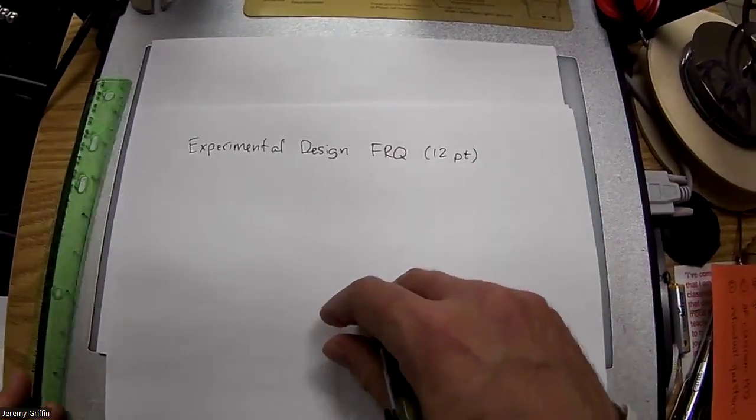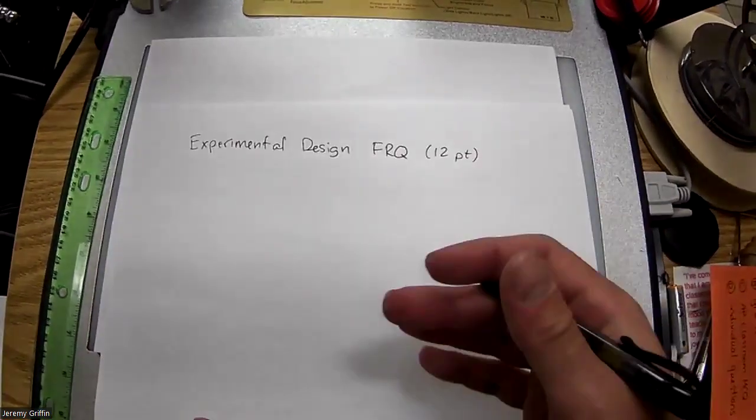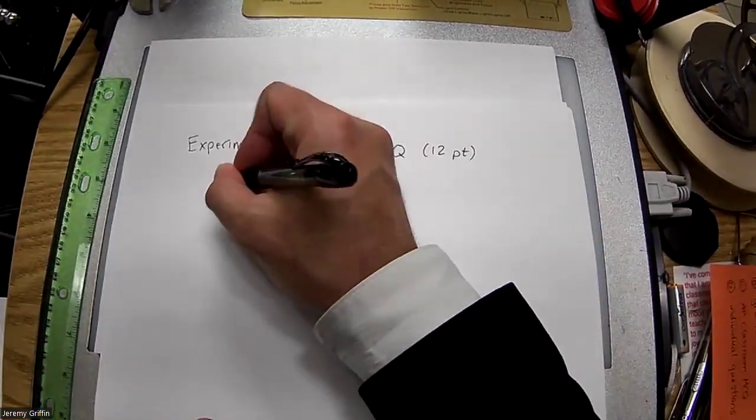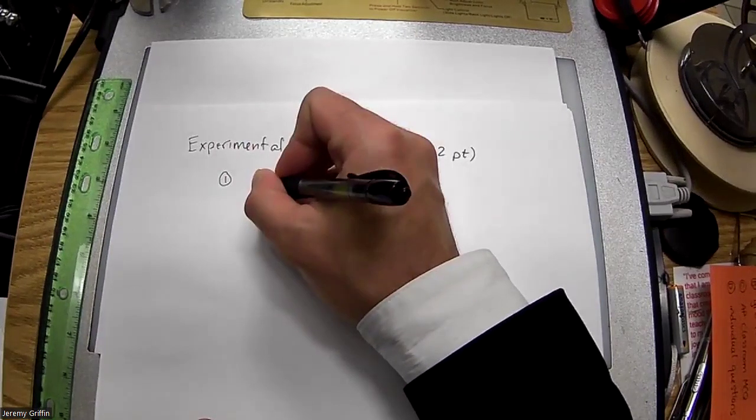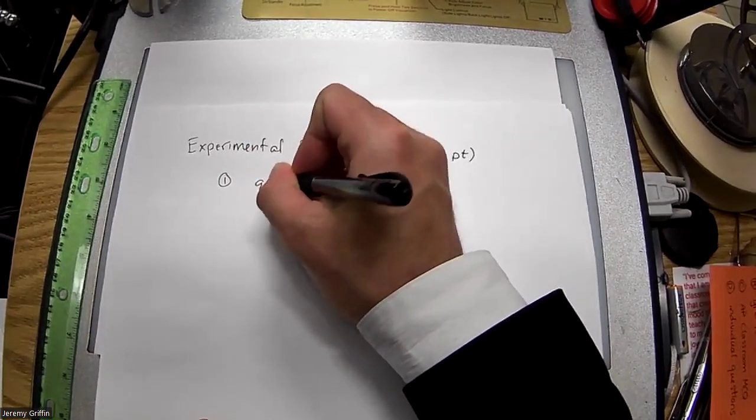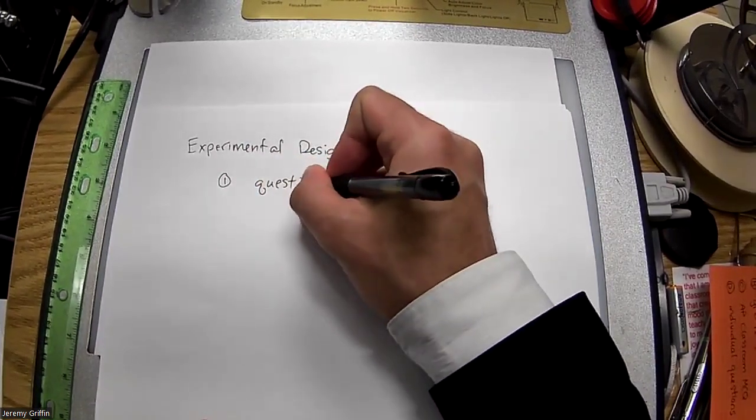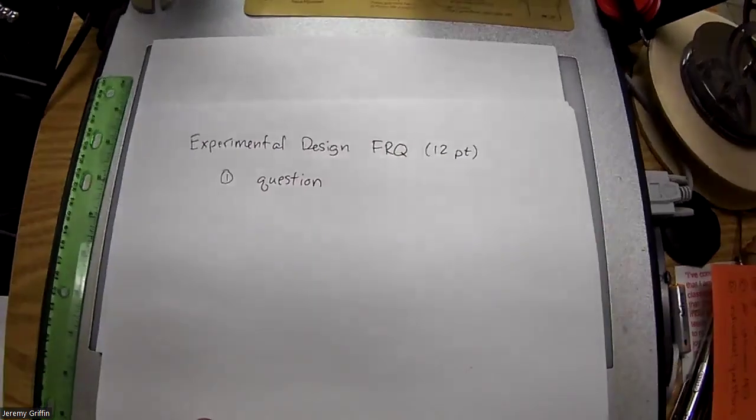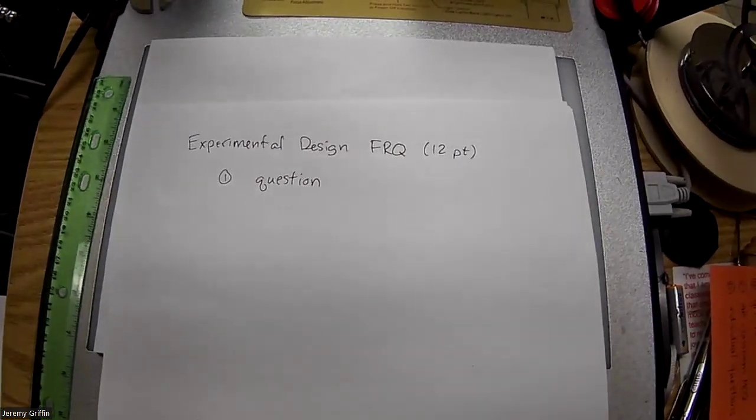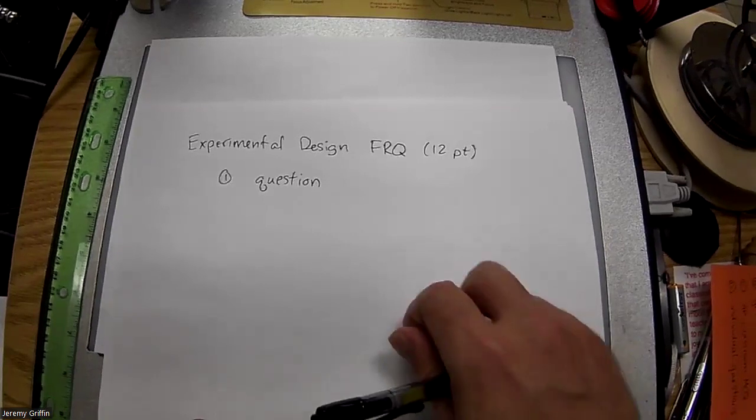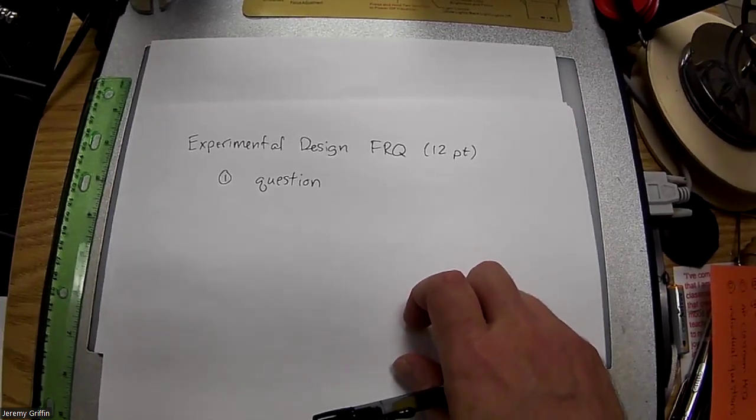There's a predictable format as to what these are going to be. Think about it as being these five parts. Part one is a question. When I have you guys do lab write-ups, I always have you list this as step number one, but they're going to hand that to you. They're going to say figure out something. So they'll hand you some scenario.